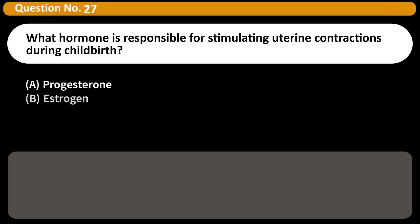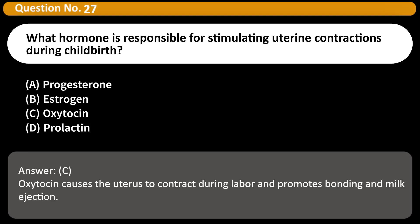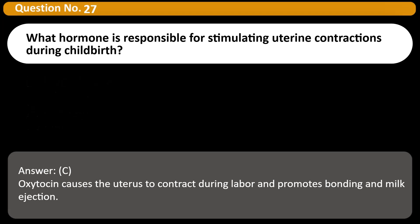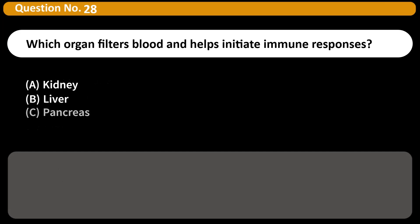What hormone is responsible for stimulating uterine contractions during childbirth? A) Progesterone, B) Estrogen, C) Oxytocin, D) Prolactin. Answer: C. Oxytocin causes the uterus to contract during labor and promotes bonding and milk ejection.